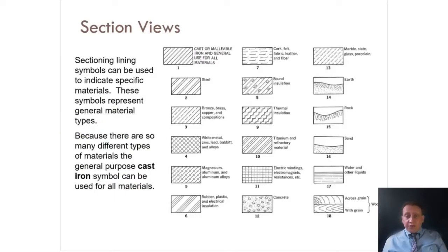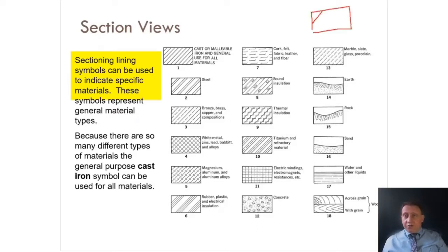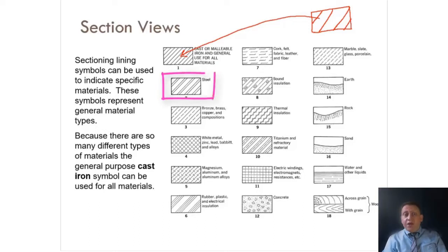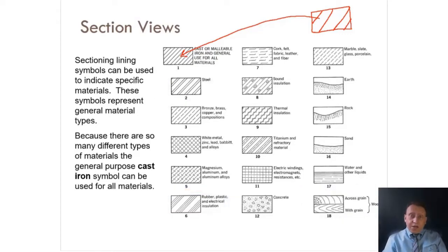We have different types of materials used for section lines. Section line patterns can indicate the specific material being cut. The first and standard pattern is cast iron. But if you need to cut steel, plastic, or any other material, you can use the appropriate pattern. We have different shapes: steel, plastic, wood. Whatever material you are sectioning, you have to use the correct type of pattern.